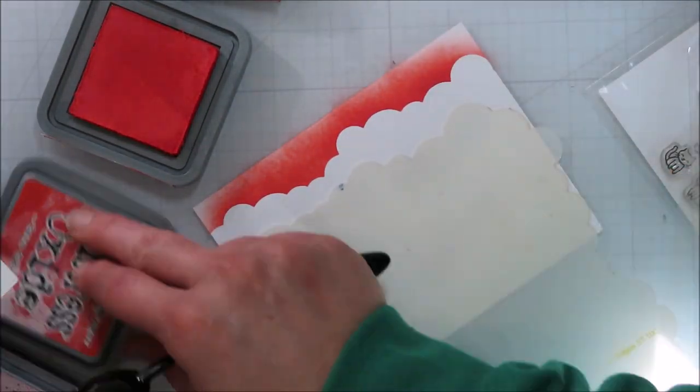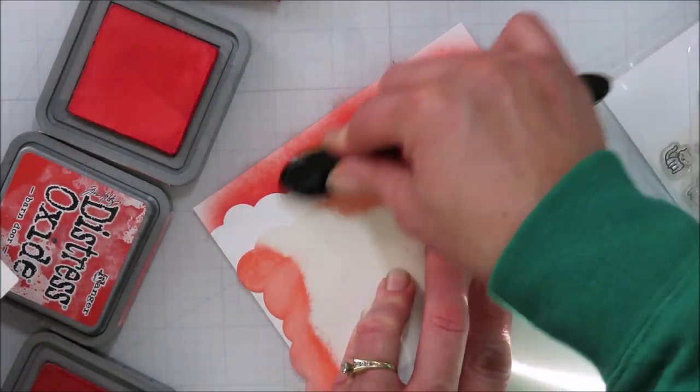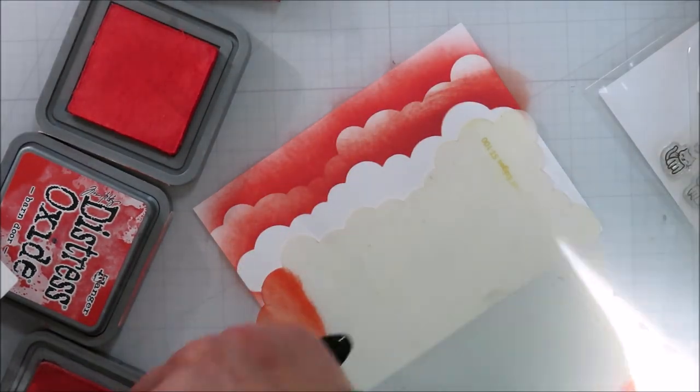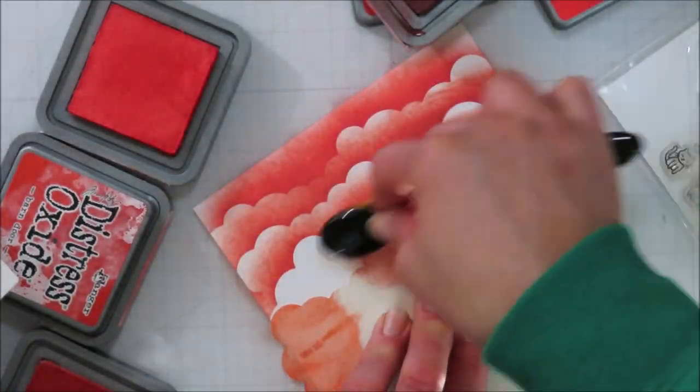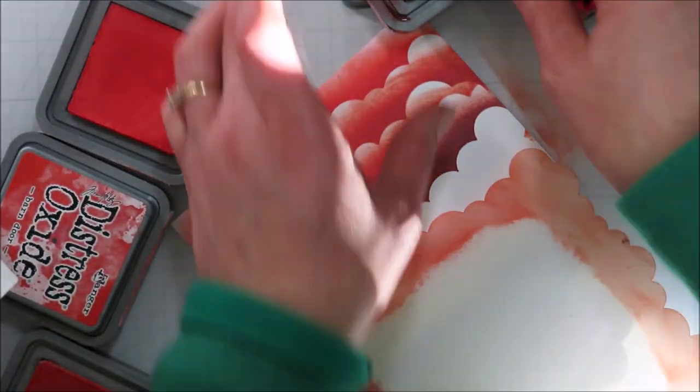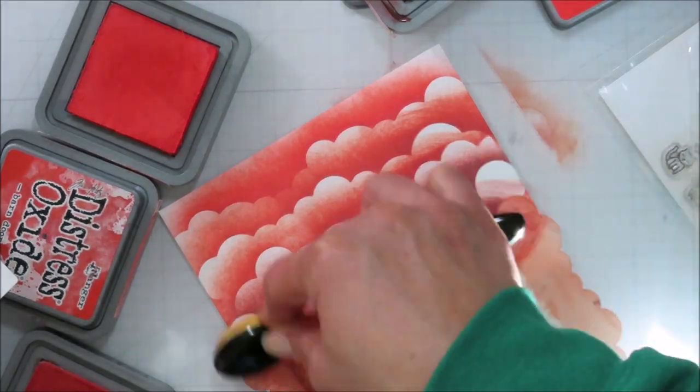So once I had those all done, I needed to work on my background. So I'm coming in with that cloud stencil from MFT Stamps. I think this one is the small clouds because they have a mini one. I have that one too, but it wasn't that one.